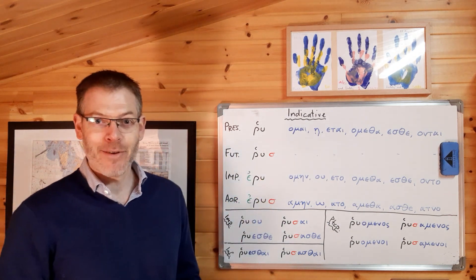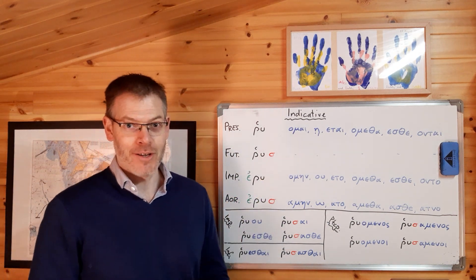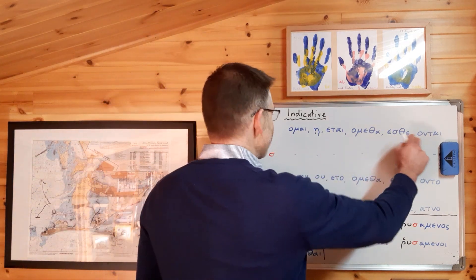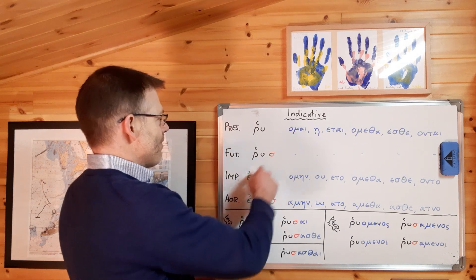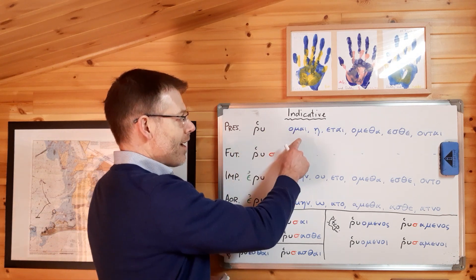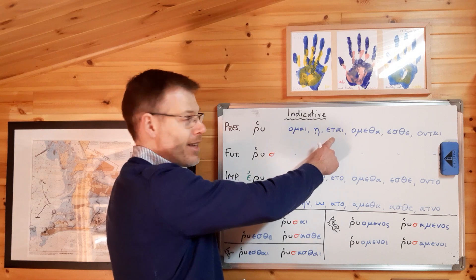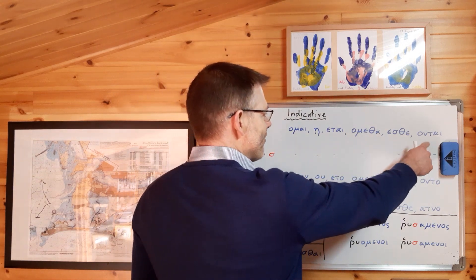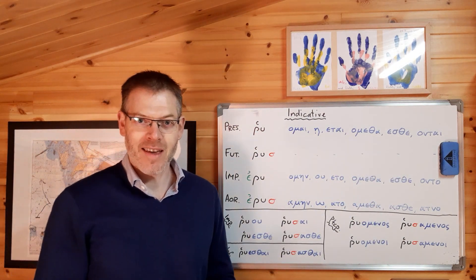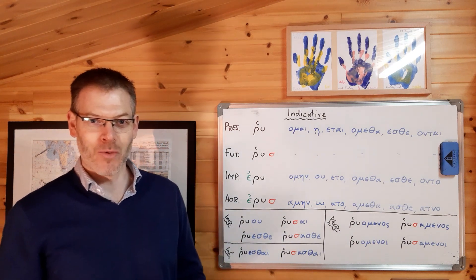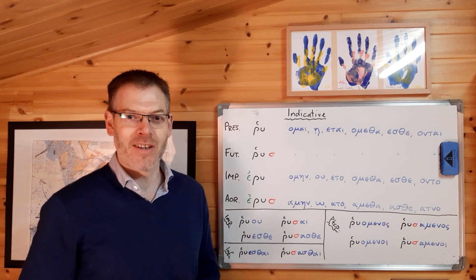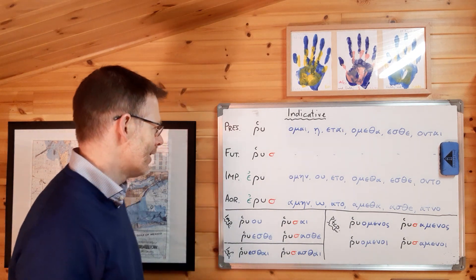Now, sticking with the indicative, here is some good news. You do have to learn a new set of endings for the present tense. Here we've got the indicative present tense: ruomai, ruei, ruetai, ruometha, ruesthe, ruontai. And as ever, you've just got to go away and chant them out until you're blue in the face and have driven your cat and your sister and your parents mad with it.